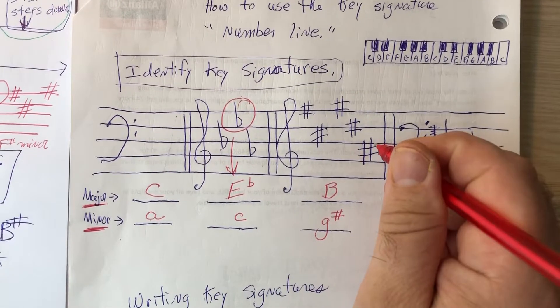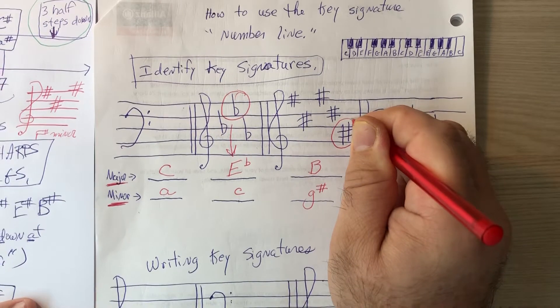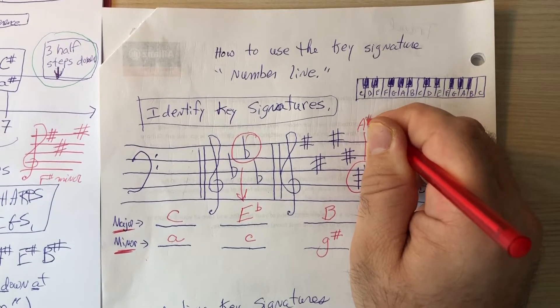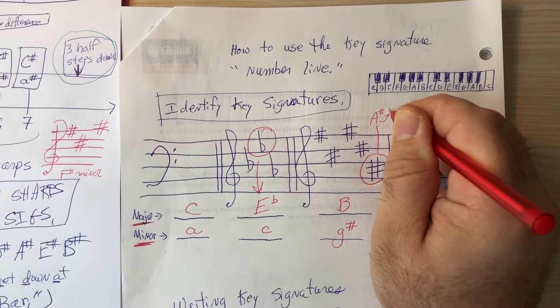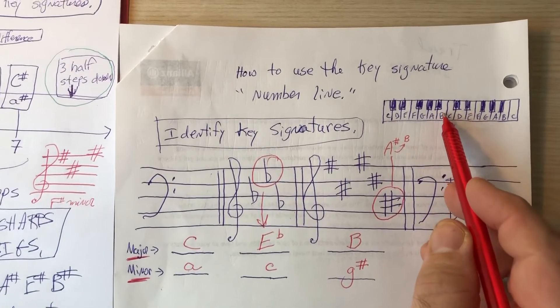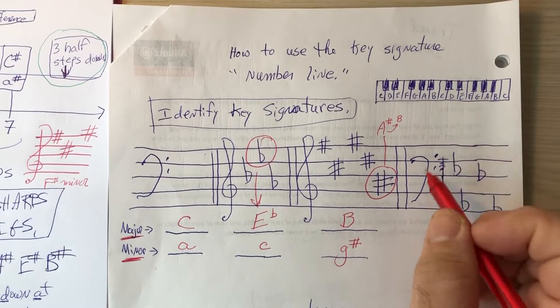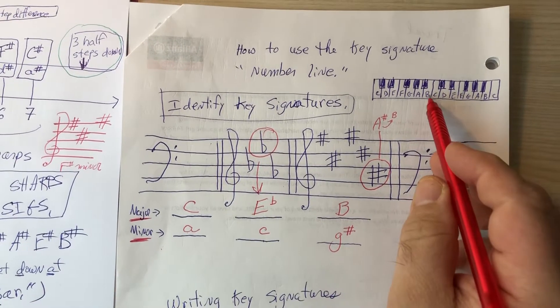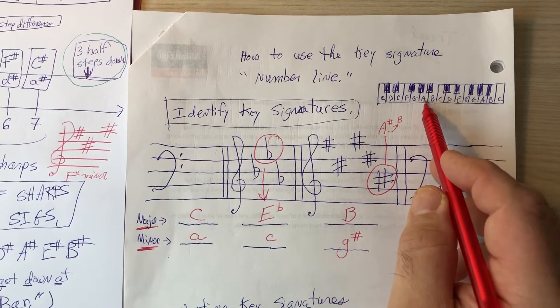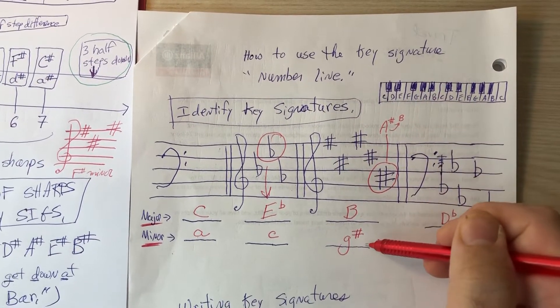The rule for sharps tells us that a half step above the last sharp gives us the name. So the last sharp is an A sharp. If you go up a half step, you end up on B. Okay, there's A sharp, up a half step, you end up on B. So the name would be B major. To figure out its relative minor, you go down three half steps, one, two, three. Could be G sharp or A flat. Since there are sharps in the key signature, we go with G sharp.